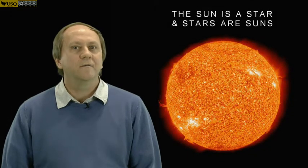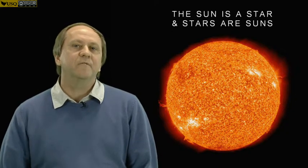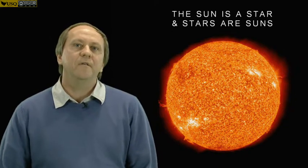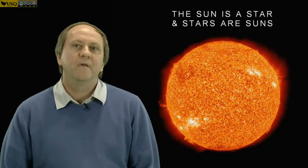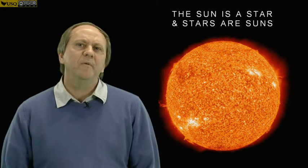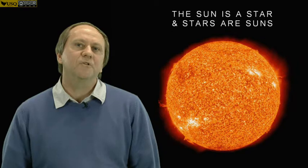The Sun is a star and stars are Suns. So 150 million kilometres away we've got a fantastic example of a typical star. Our Sun is a giant ball of gas, very bright, and the big mystery has been what makes the Sun shine.